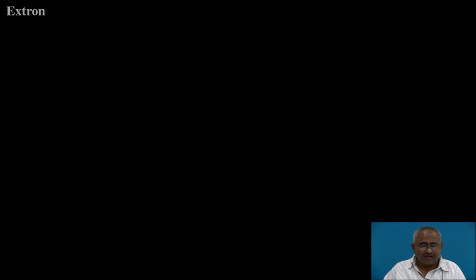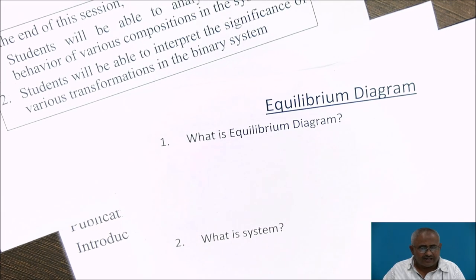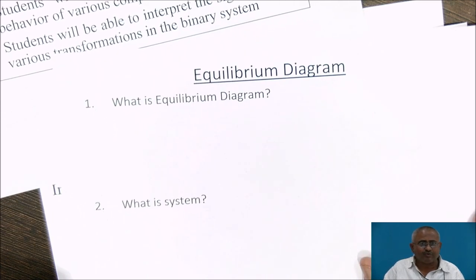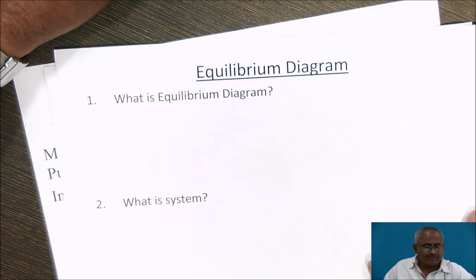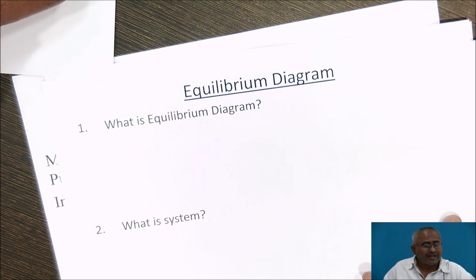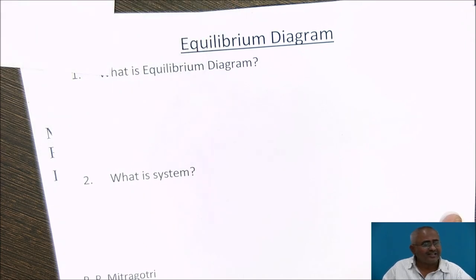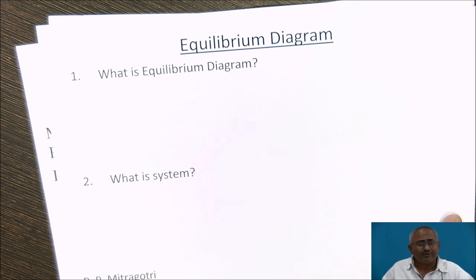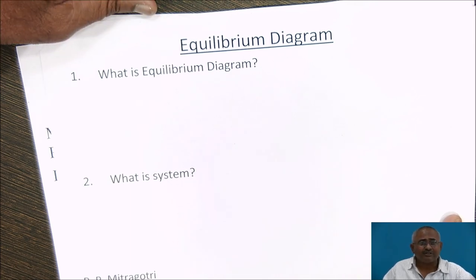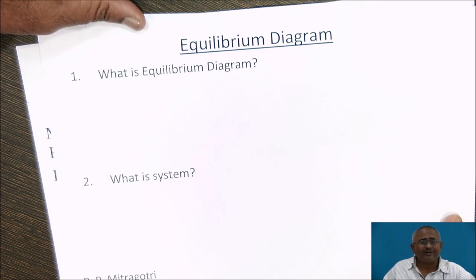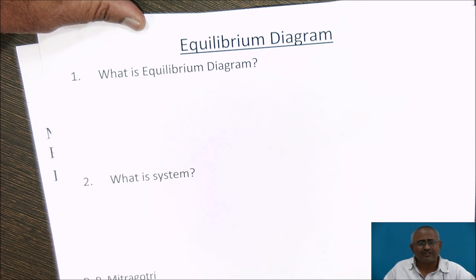Now, in the earlier session, we have already discussed the significance of cooling curves and what cooling curves are. Cooling curves are drawn for one single particular composition of an alloy system, but they will not give us any idea regarding the solidification behavior of the total alloy system. For that, equilibrium diagrams will help us, giving us an idea regarding solidification behavior and phase transformations taking place in each and every composition of an alloy system at a glance.